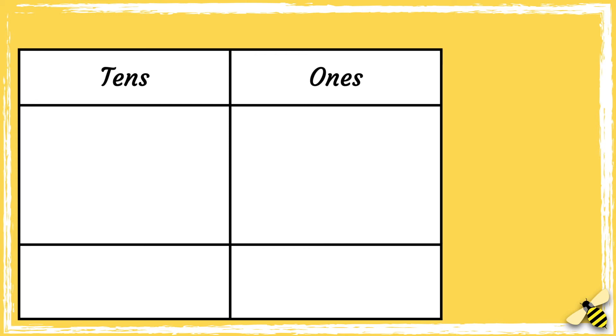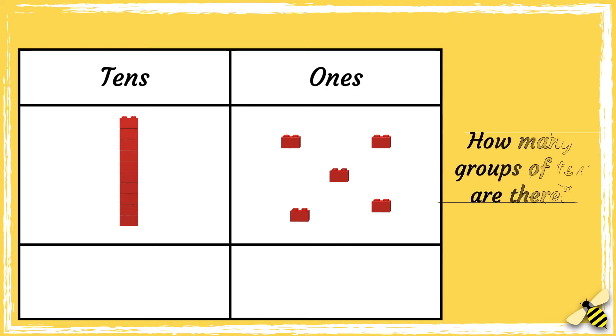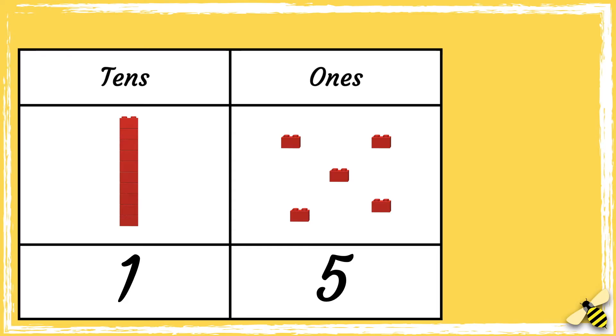Let's look at one more number. What number is shown on the grid? How many groups of ten are there? There is one group of ten. Now let's see how many ones there are. There are five ones. So the number is 15.